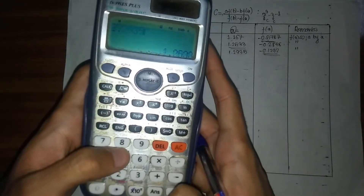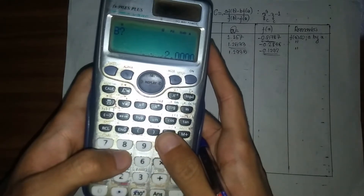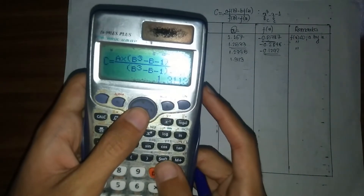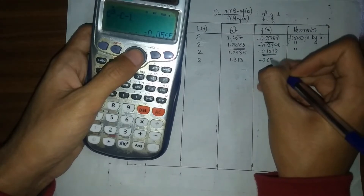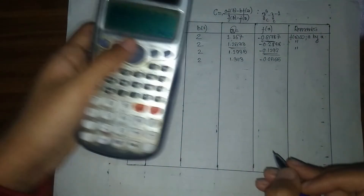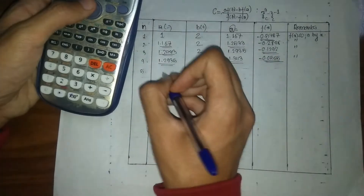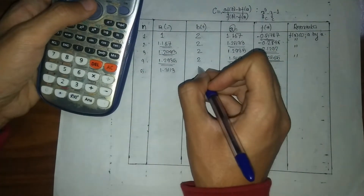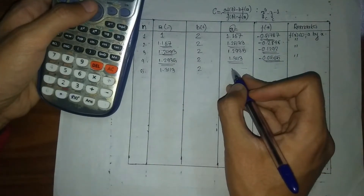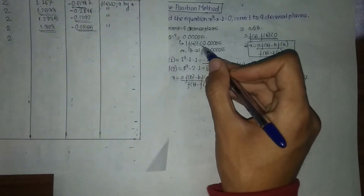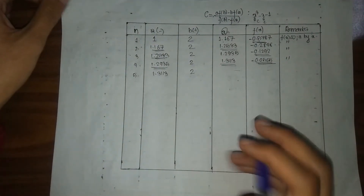I go back to the calculator, replace the value of a by 1.2935, the value of b remains the same. I get my value of x as 1.3113 and my value of f(x) as minus 0.0565. Again since the value of f(x) is negative, I replace a by 1.3113 while b remains the same. I need to repeat this process until f(x) is less than 0.0005, so let me skip to the portion where I get that value.